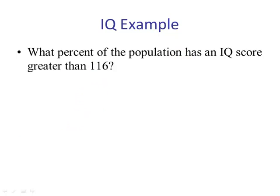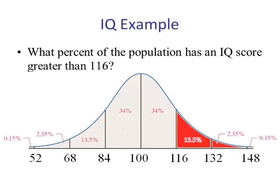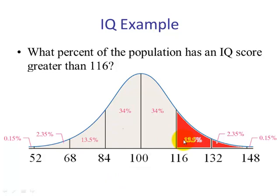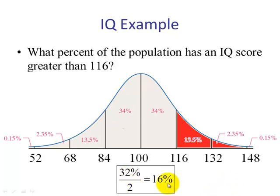What percent of the population has an IQ score greater than 116? From the previous problem, we know that the left tail and the right tail add up to 32%. Since this distribution is symmetric about its mean, the left tail and the right tail have the same area. So if the two tails add up to 32%, if I only want one tail I divide by 2. Therefore, 16% of the IQ scores are greater than 116.